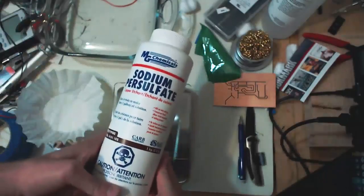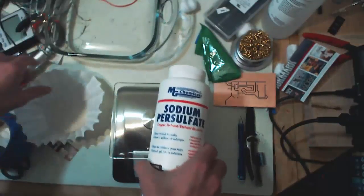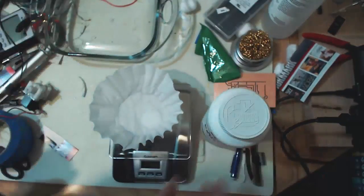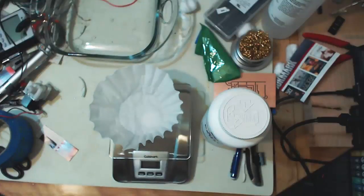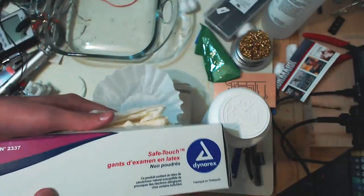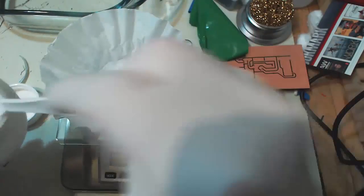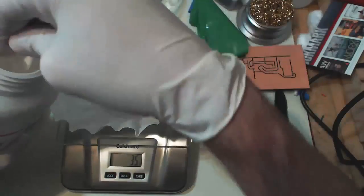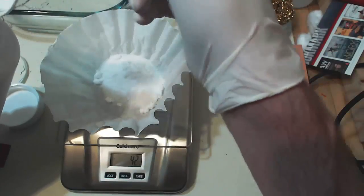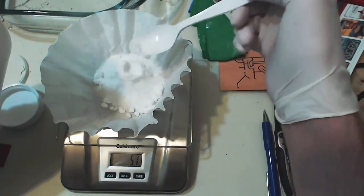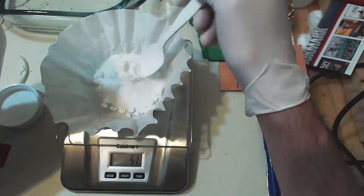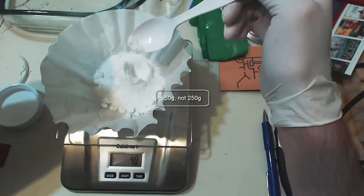Here I have a bottle of sodium persulfate crystals, a kitchen scale that measures down to a gram, and a coffee filter as well as some latex gloves. So now I measure out 250 grams of sodium persulfate onto this coffee filter, and then I will add it to the liquid, because you add solid to water like you oughta.